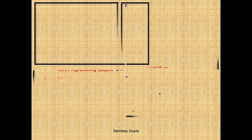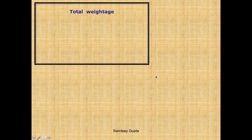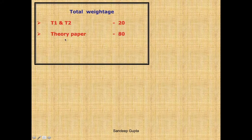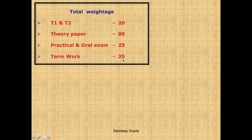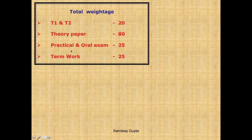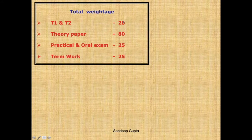Now let's talk about the total weightage of the subject. In Data Structures, you have Unit Test 1 and Unit Test 2, each for 20 marks, and the average of the two is taken out of 20. Then you have a theory paper of 80 marks, a practical and oral exam of 25 marks, and term work of 25 marks. For the practical and oral exam, you will be given a program to execute. The 25 marks will be based more on orals than practicals. The total for the entire subject is 150 marks.